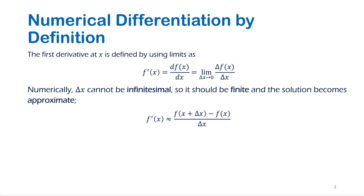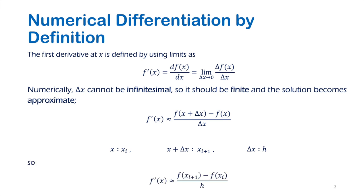So we can rewrite delta f of x as the difference between the value of the function at a given x and its value at x plus delta x. This approximation can be written using more concise and common notation, giving us a formula which represents the approximation of the first derivative, also known as the forward differences method.